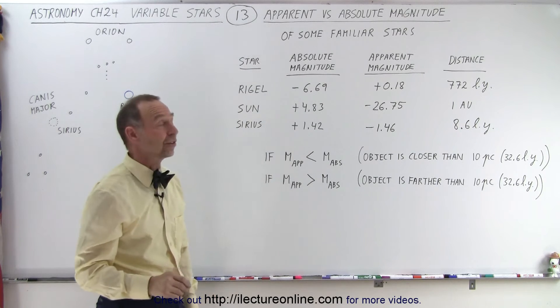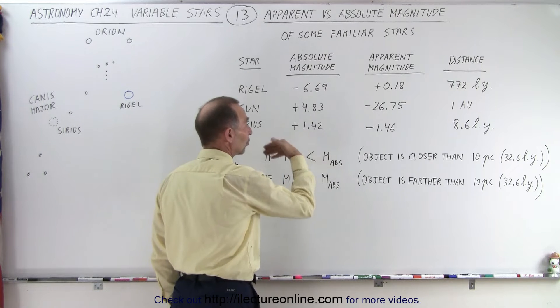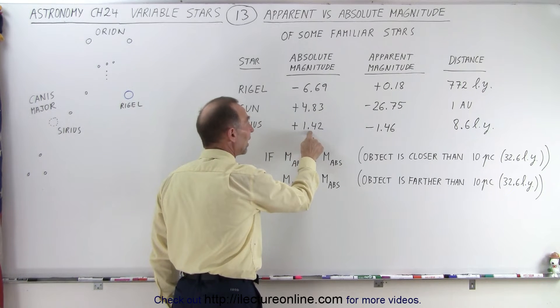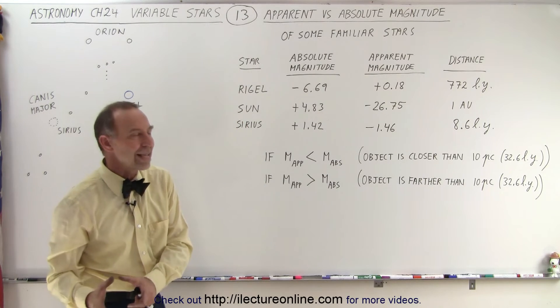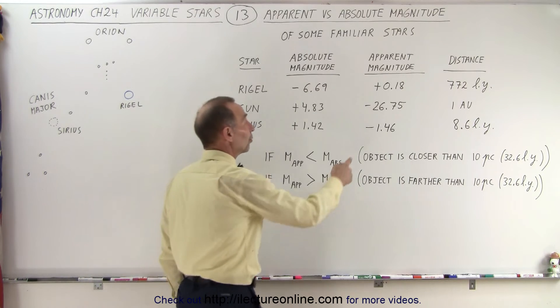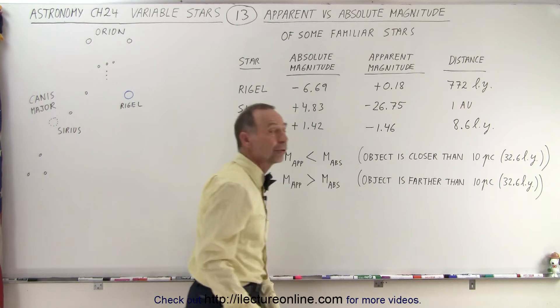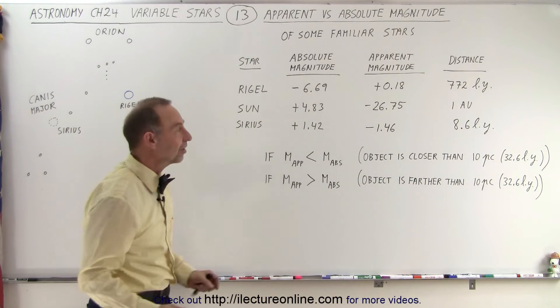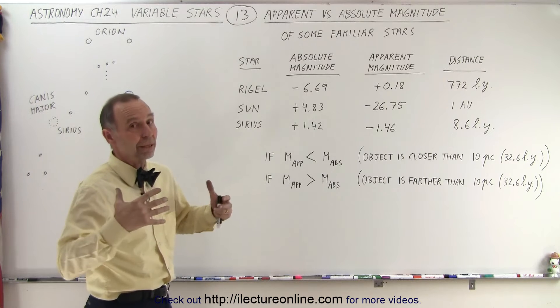How about Sirius, the brightest star in the sky? Well, if we were to move it at a distance of 10 parsecs, which is 32.6 light years, it would have an apparent magnitude of 1.42, which of course makes it the absolute magnitude. Well, the apparent magnitude actually is minus 1.46 because it is a lot closer than 32.6 light years at standard distance, which means it is brighter because it's closer, not because it's bigger.